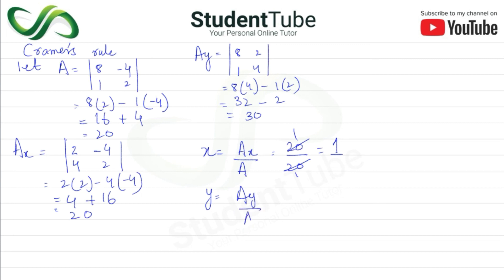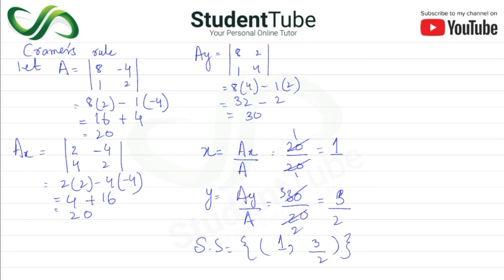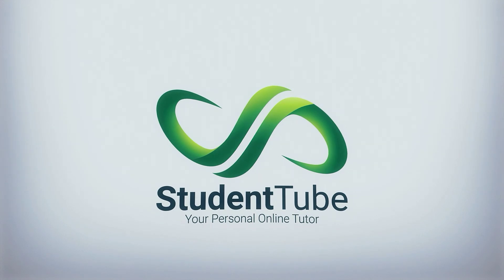For Cramer's rule, Ay over A gives 30 over 20, which simplifies to 3 over 2. So the solution set is {1, 3/2}. I hope you understood well. For more exercises and questions, please subscribe to the channel and share with your classmates and friends. Allah Hafiz.